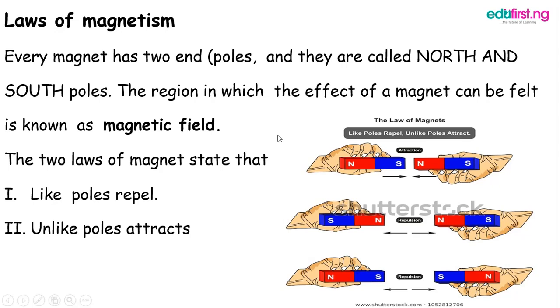The loadstone or magnets were found to be an oxide of iron — that is, a chemical combination of iron and oxygen. Every magnet has two poles: a north pole and a south pole. The region in which the effect of a magnet can be felt is known as the magnetic field.